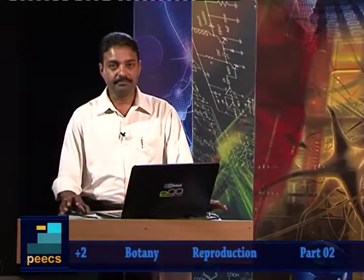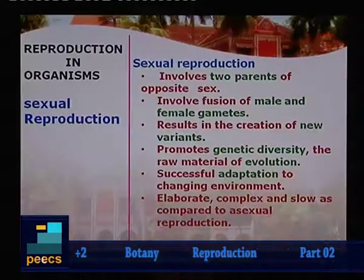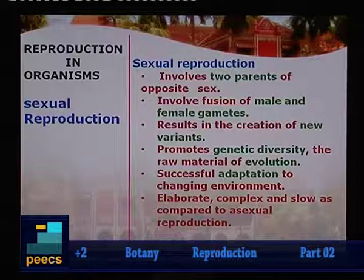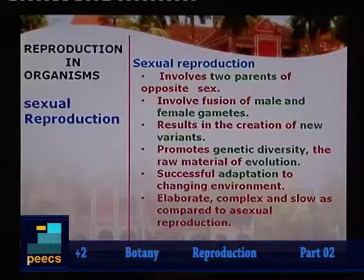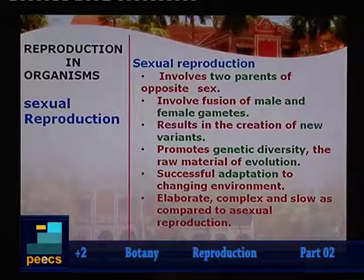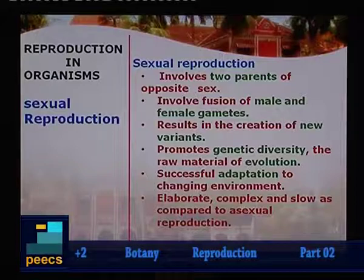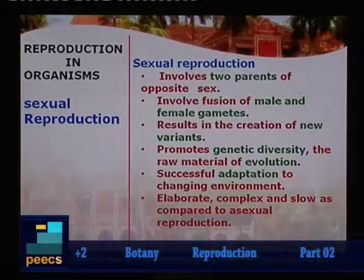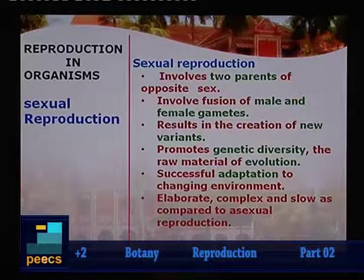Sexual reproduction involves two parental cells of opposite sex, producing male and female gametes respectively from male and female parents. Subsequently, the gametes undergo the phenomenon called fusion or fertilization. This leads to variation in the formation of new species. Indirectly, this promotes genetic diversity, which is the basic material for evolution. It is also successful for adaptation to changing environments.